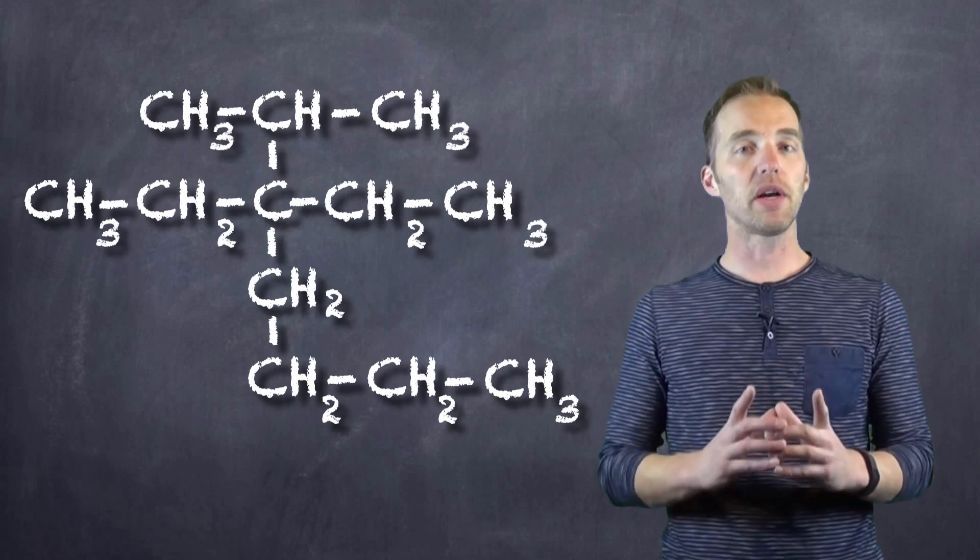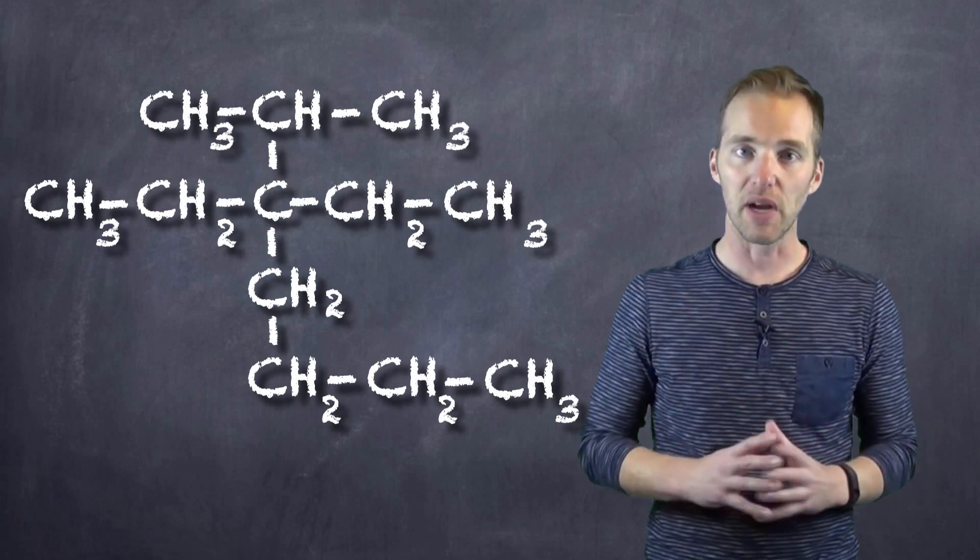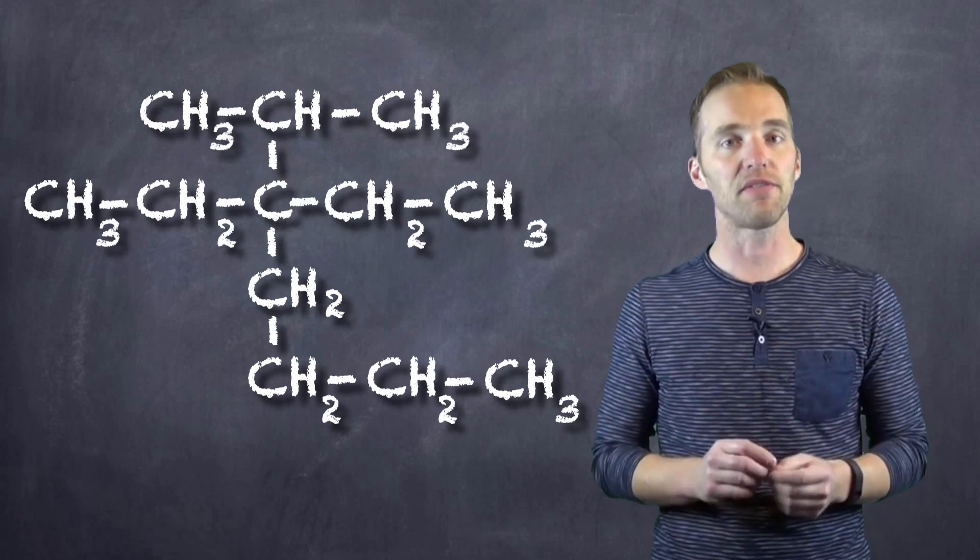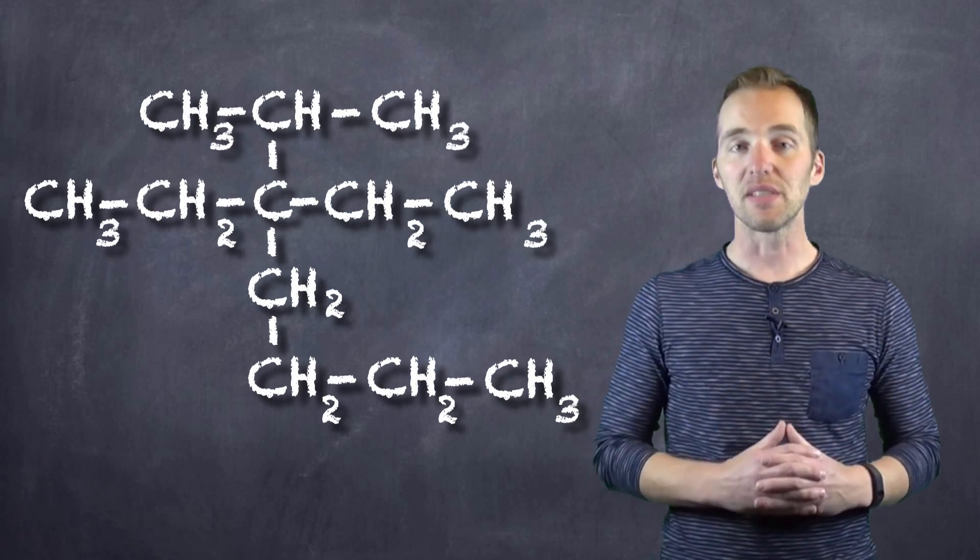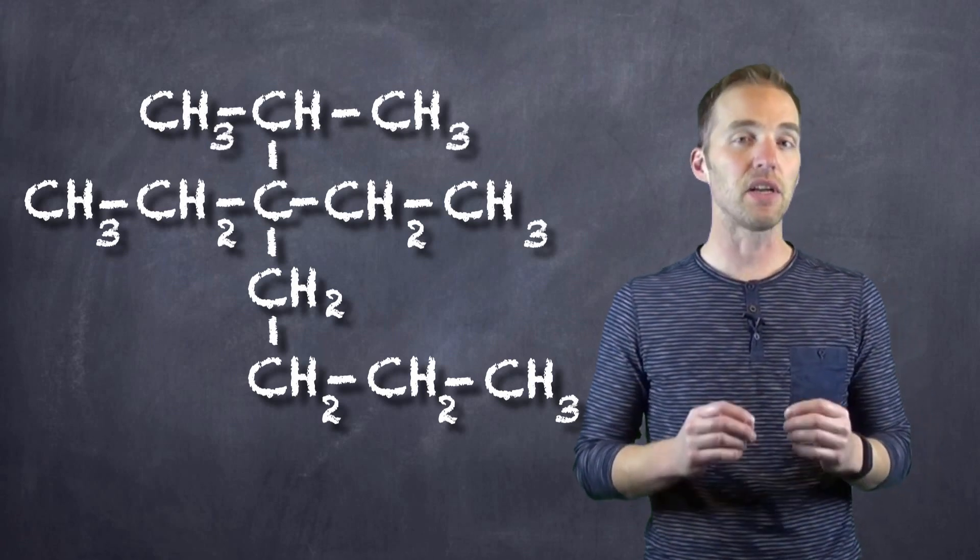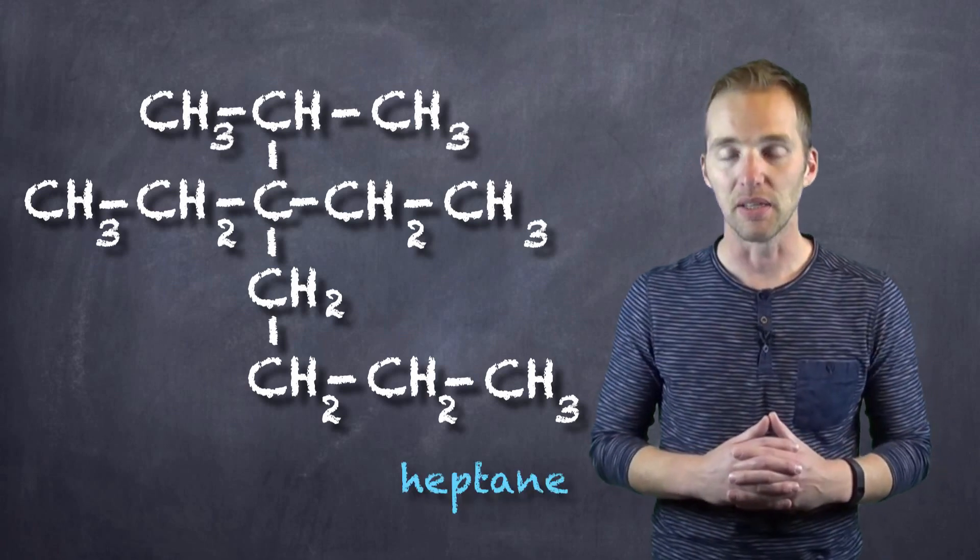However, if we see the longest continuous chain, that is we identify the longest stretch where we don't have to lift our pencil off of the paper, we can see that there are actually seven adjacent carbons, and that this is in fact a heptane.